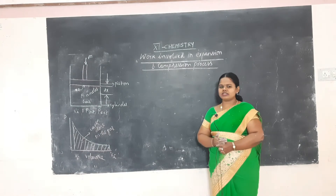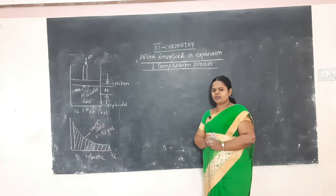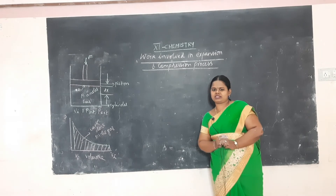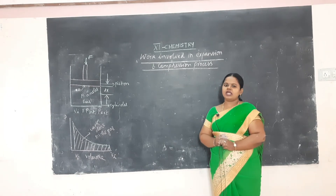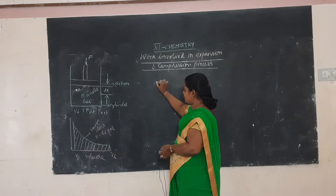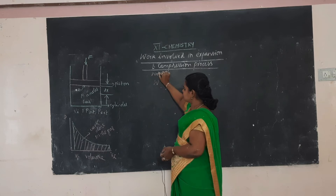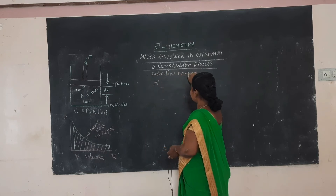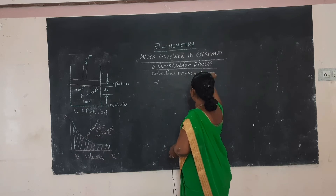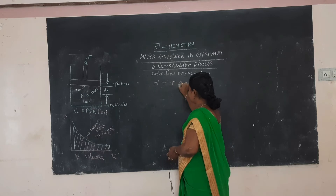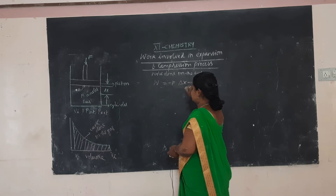Here, work is done on the system. When work is done on the system, you can write: W = -F × Δx. This is the first equation, where Δx is the distance moved by the piston during compression, and F is the force acting on the piston.